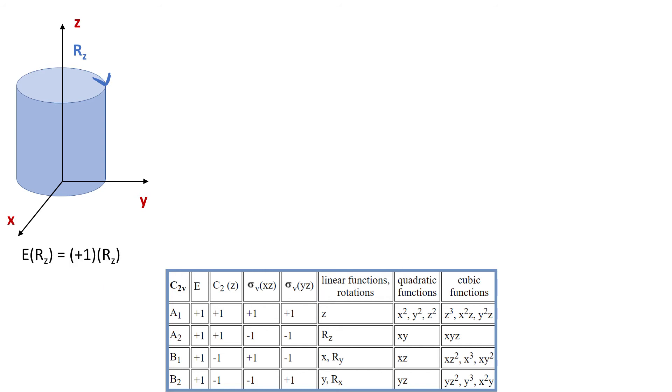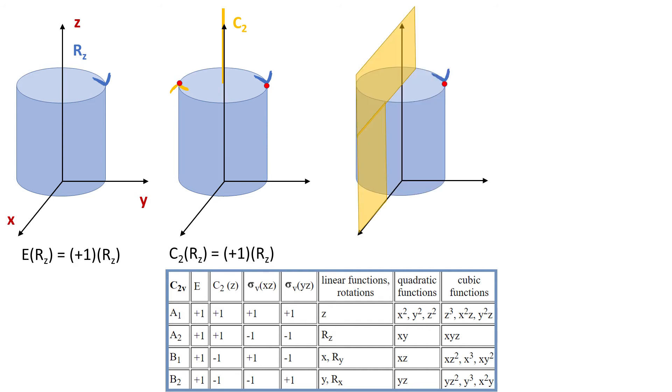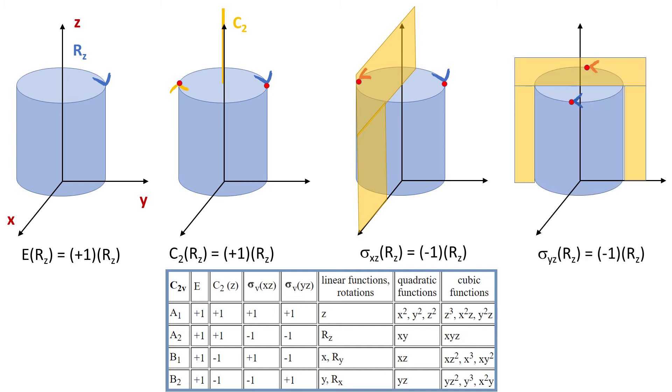So E does nothing, the cylinder rotates clockwise. Now C2, let's focus on the red dot. We can see that the rotation by 180 degrees takes the arrow here and the direction is preserved. If we do sigma xz, then we reflect the arrow to the other side and now notice that the direction does change and similarly with sigma yz.